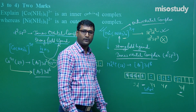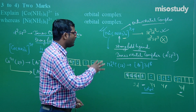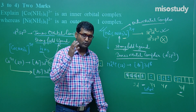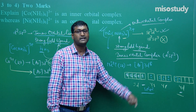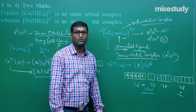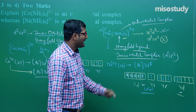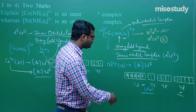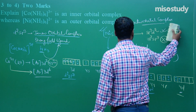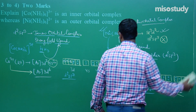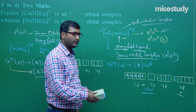So the hybridization is SP3D2, not D2SP3. Sometimes there are exceptions — you have to check the details. I have given you the detailed explanation of VBT and how to find magnetic moment and hybridization.